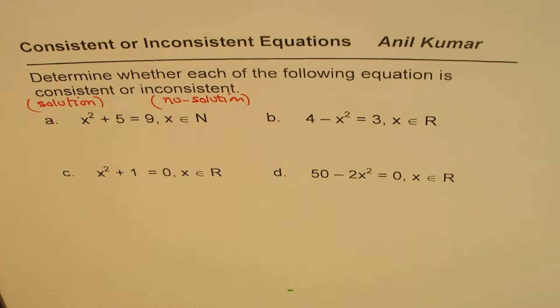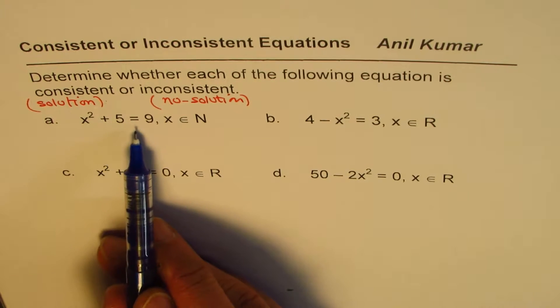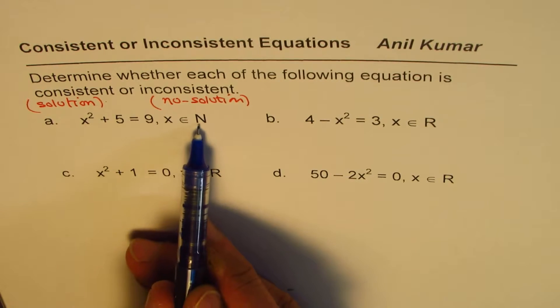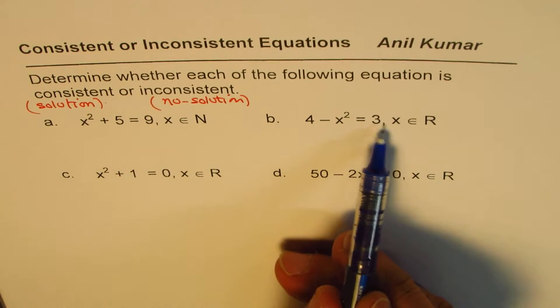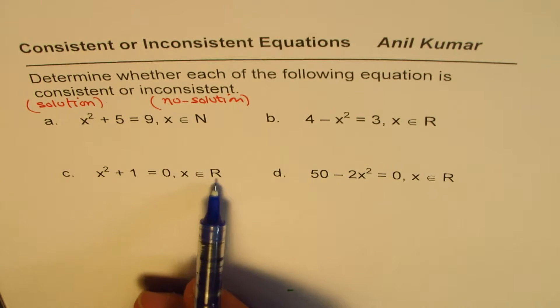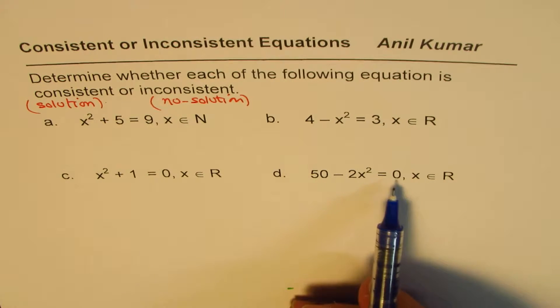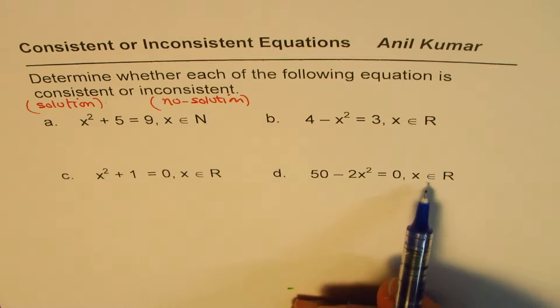Now let's look into these equations and solve them. The first one is x squared plus 5 equals to 9, x belongs to natural numbers. Second, 4 minus x squared equals to 3, x belongs to real numbers. Third, x squared plus 1 equals to 0, x belongs to real numbers. And the last one is 50 minus 2x squared equals to 0, x belongs to real numbers.